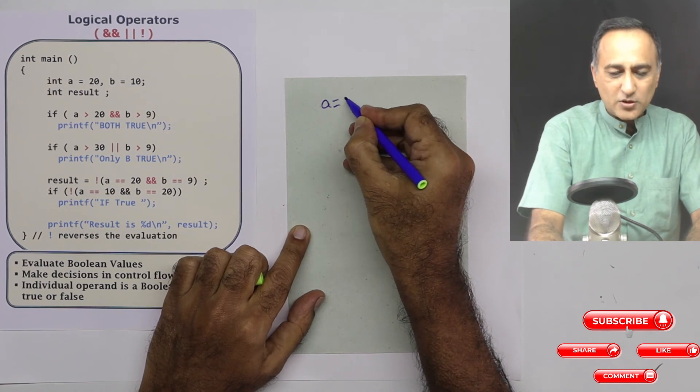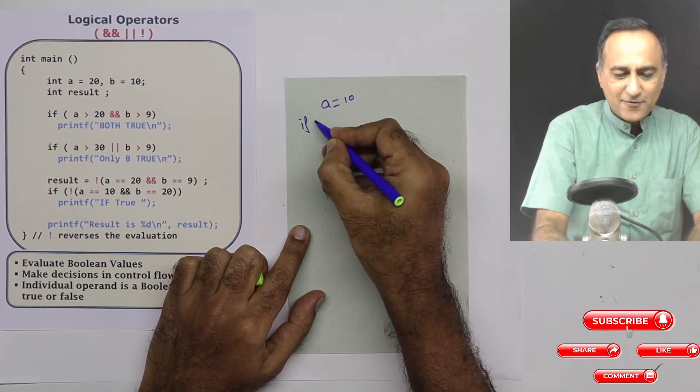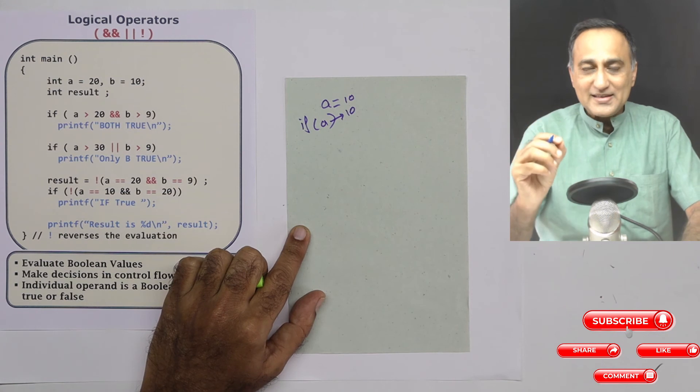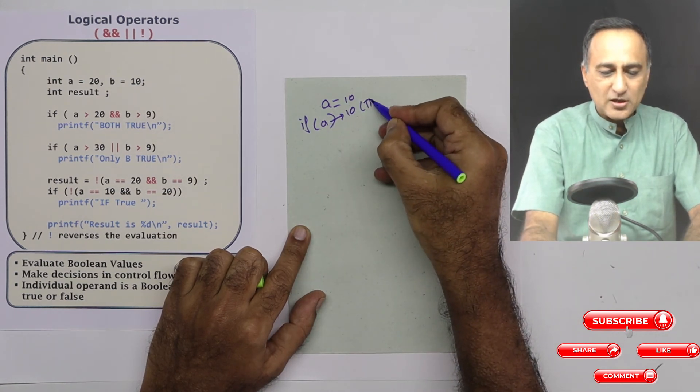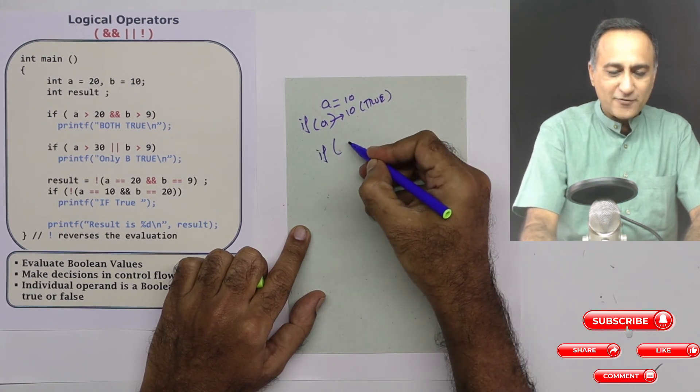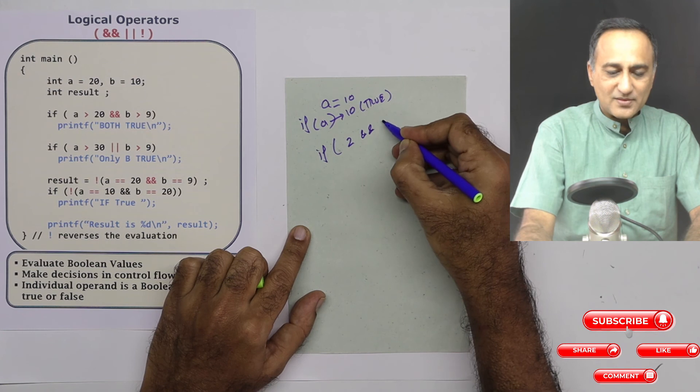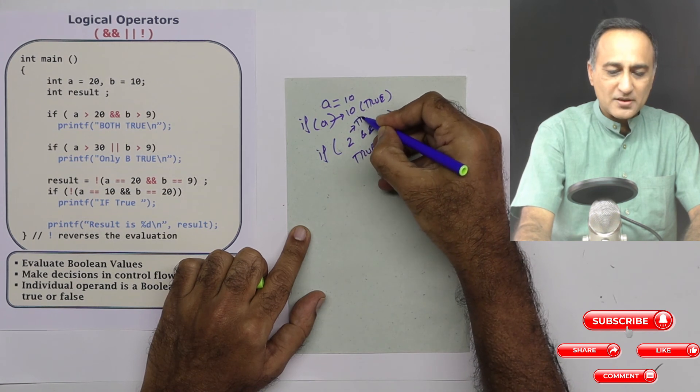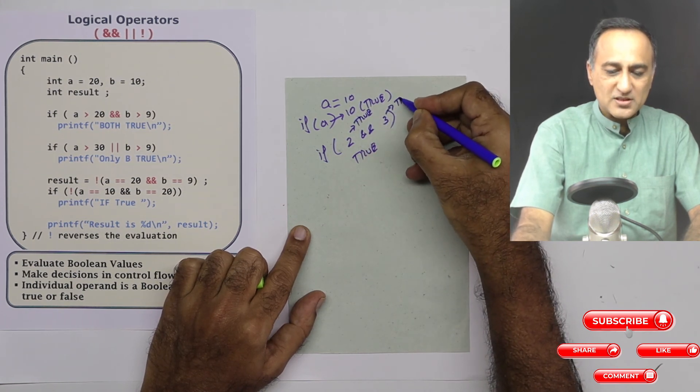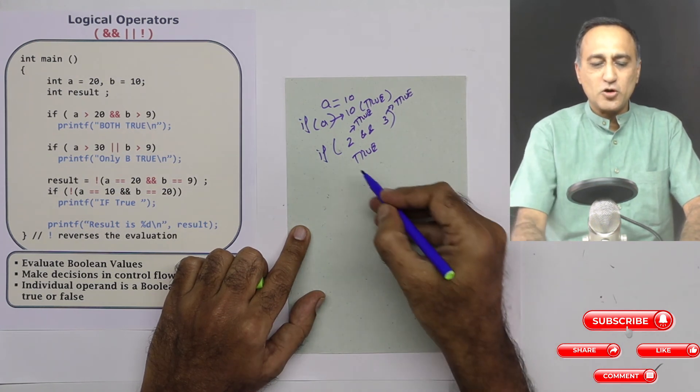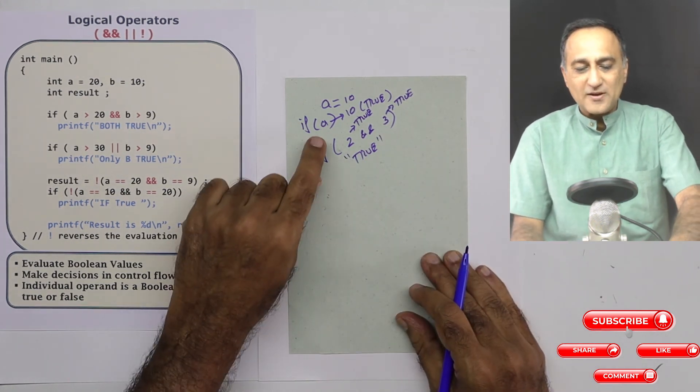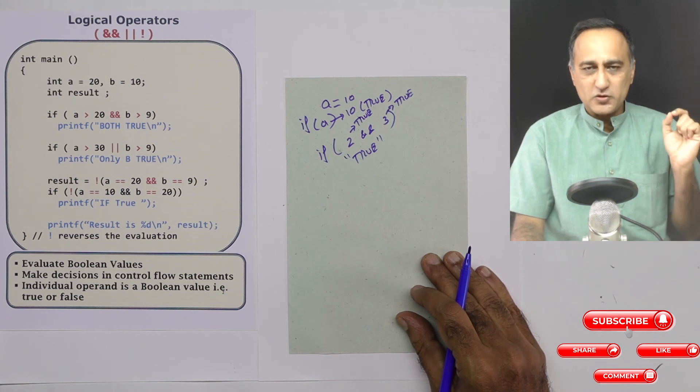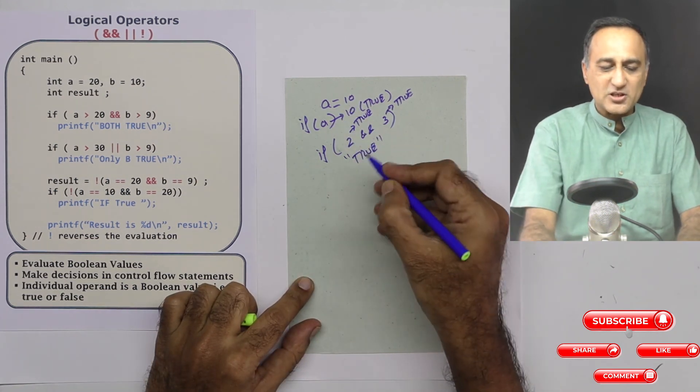Suppose I say A is equal to 10. Now if I say if A, what is the value of A? It will be substituted with 10. 10 is a nonzero number. That's why this is considered to be as true. So if you do something like this, if 2 and 3, this will print the message as true, because this is a nonzero number, is considered as true. This is also a nonzero number, this is considered as true. So the output of this is going to print the message true. So true means if any of these individual components has a nonzero value, it is considered to be true. So in this case, since A was 10, it was considered to be true.